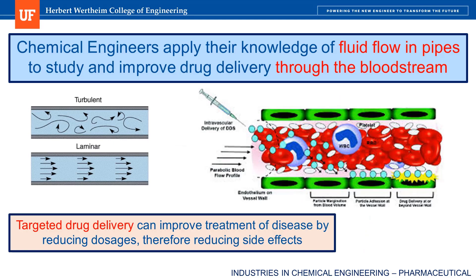Yet another area where chemical engineers can apply their knowledge is targeted drug delivery. When I was in college, I had an undergraduate research project in this area for a few semesters. The idea is that blood flowing through a bloodstream is not that much different from fluid flowing through a pipe — the same principles of fluid dynamics apply. With this knowledge, chemical engineers can design drug-carrying particles to move towards the sides of your arteries, where they are likely to encounter the inflamed endothelial cells where the drugs are needed the most.